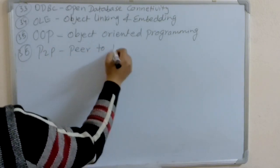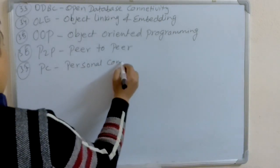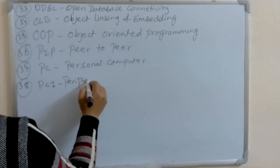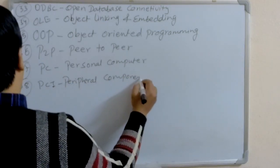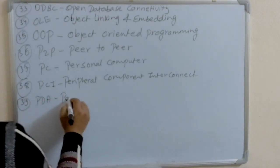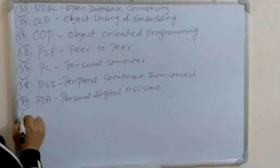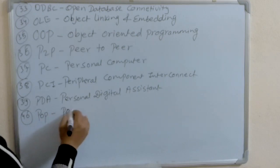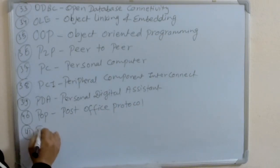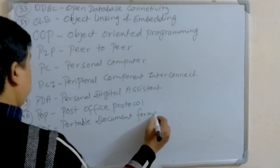P2P: Peer-to-Peer. PC: Personal Computer. PCI: Peripheral Component Interconnect. PDA: Personal Digital Assistant. POP: Post Office Protocol. PDF: Portable Document Format.